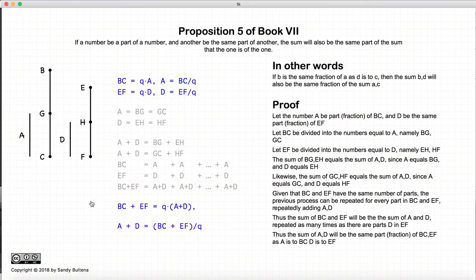So, consequently, as a result of all of this and all of this being very difficult to put in words, we have that a plus d is a fraction of bc plus ef and that fraction is the same as the original fraction we had up here.